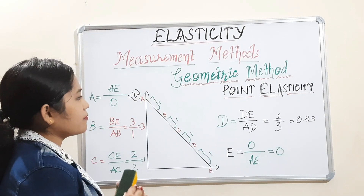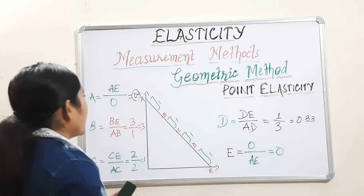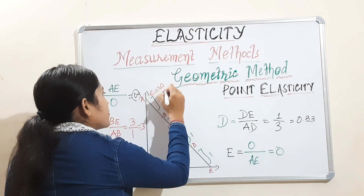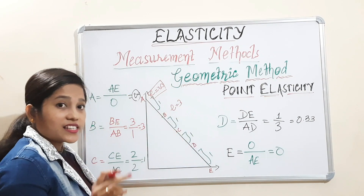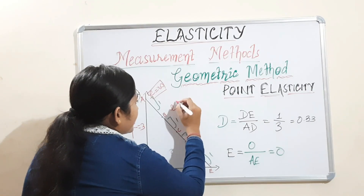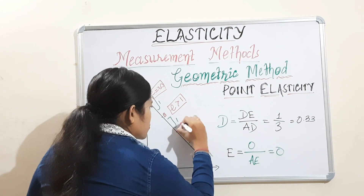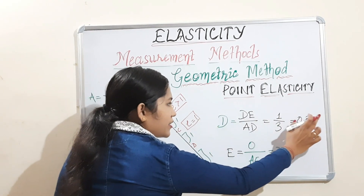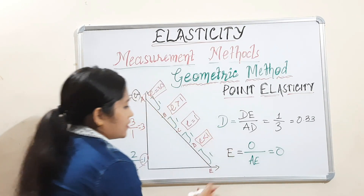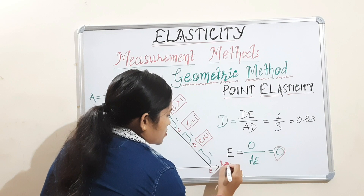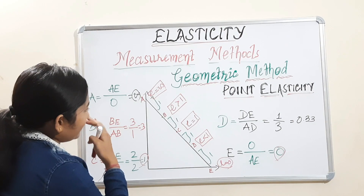So we have calculated the elasticity at each and every point. At point A, elasticity is infinity. At point B, elasticity is 3 — that means E is greater than 1. At point C, E equals 1. At point D, 0.33 — that is less than 1, so E less than 1. And at point E, elasticity equals 0.